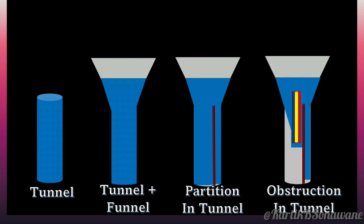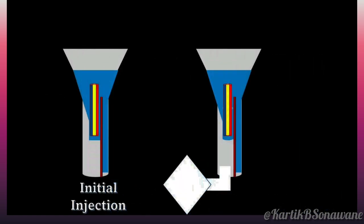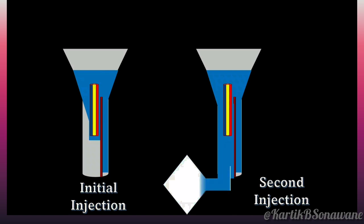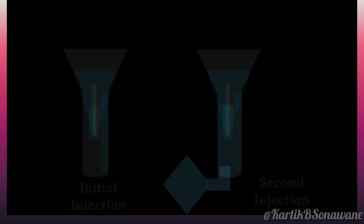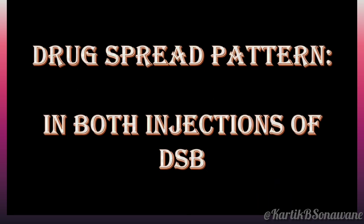As liquid fills the tube during the initial injection, subsequent injections into the partition tube will prompt the liquid to flow towards the area of least resistance, typically towards any available vent or opening. If we extrapolate the same concepts, we can understand the possible local anesthetic spread pattern of DSB.